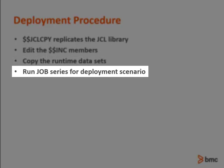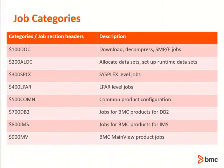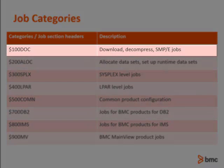Begin running jobs at the appropriate job series depending on your deployment scenario. The job names range from the $100 series through the $900 series. The first member of each series documents information about the job category. The $1 jobs are for downloading and decompressing files and performing the SMPE receive, apply, and accept jobs.